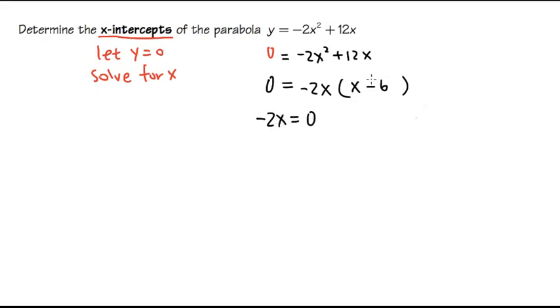And we can also make the second factor, x minus 6, equal to 0 as well. For the first one, we can just divide by negative 2 on both sides, so that this and that will cancel.